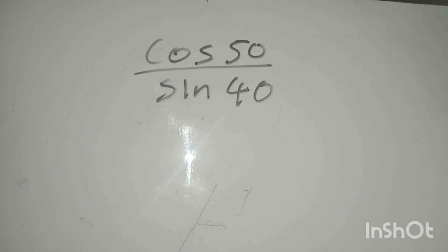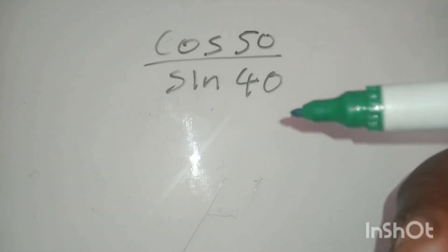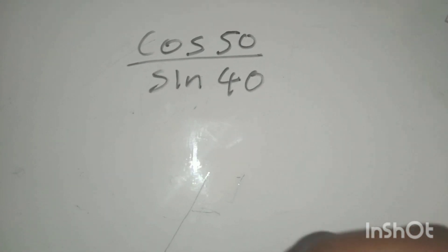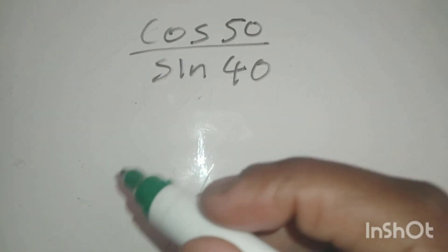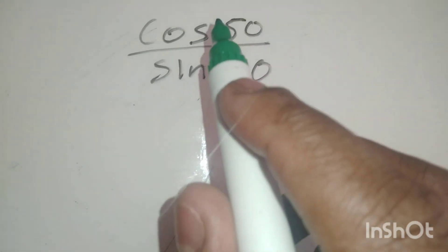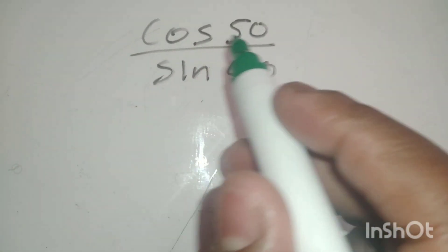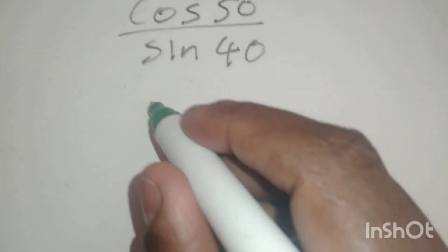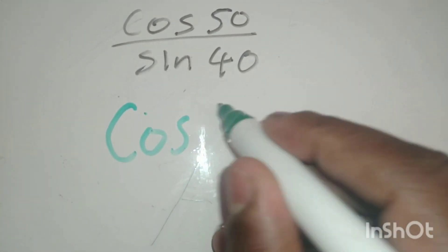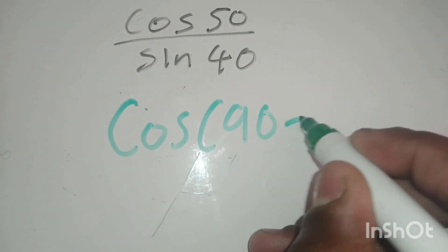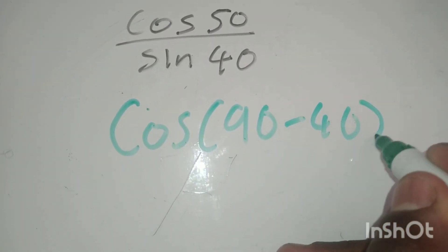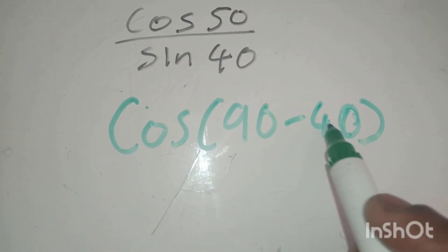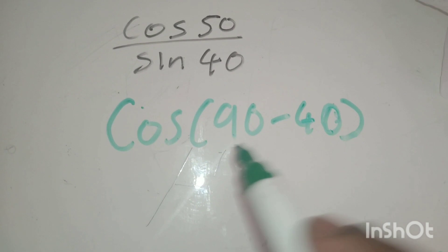So we see that 50 plus 40 is 90, which definitely means we should use co-ratios. We will change 50 into 90 minus something. So 90 minus what gives you 50? Since 50 plus 40 is 90, it means 90 minus 40 is 50. So it's going to be cos(90 minus 40). We changed how 50 looks — 90 minus 40 is still 50.